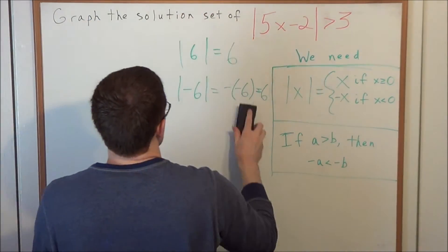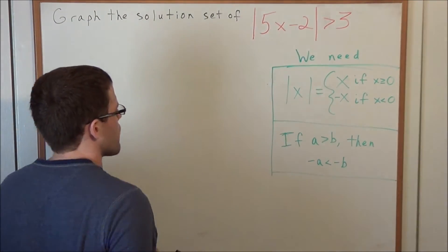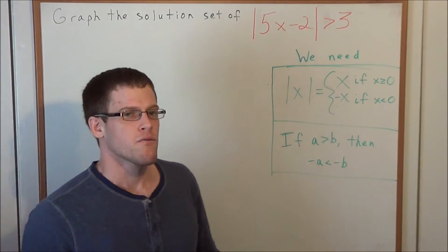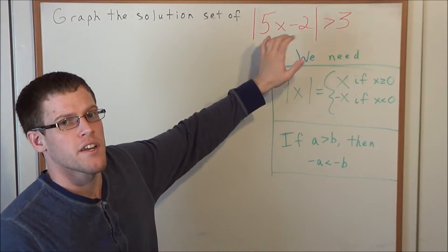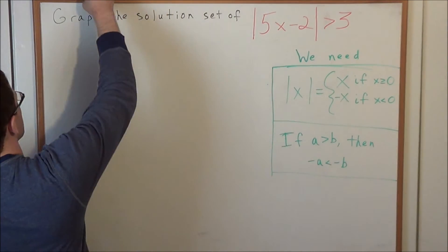So now we're going to use this definition to solve this problem. And then one more thing we want to focus on, if a is greater than b, then negative a is less than b. Really all this is saying is that when we divide or multiply an inequality by a negative on both sides, the inequality sign is going to flip. So we're going to need that also.